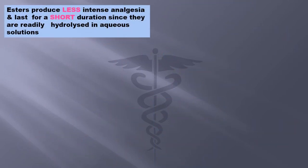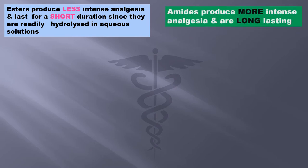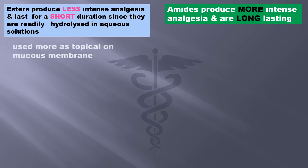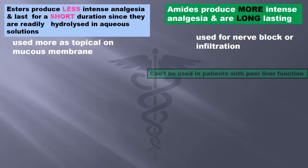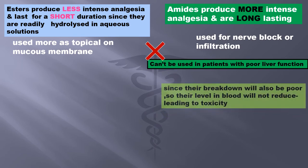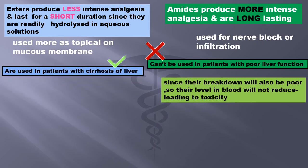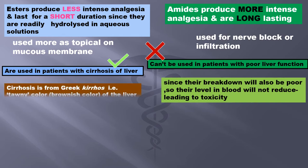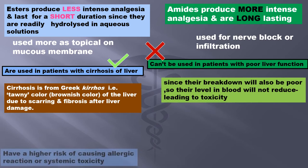Esters produce less intense analgesia and last for a short duration since they are readily hydrolyzed in aqueous solutions, whereas amides produce more intense analgesia and are long-lasting. Esters are used more as topical agents on mucous membranes; amides for nerve block or infiltration. Amides cannot be used in patients with poor liver function since their breakdown will be poor, so blood levels won't reduce, leading to toxicity. Esters are used in patients with cirrhosis of the liver — 'cirrhosis' from the Greek word 'kyrose' meaning tawny color, referring to the brownish color of the liver due to scarring and fibrosis after liver damage.